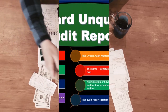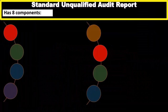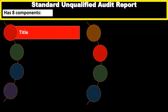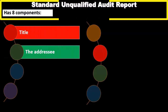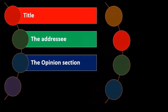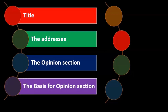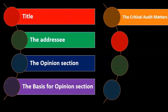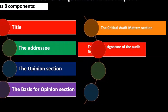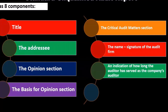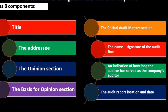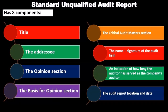There are eight typical components to the standard unqualified audit report. Those components include: a title, the addressee, the opinion section — which is the critical part, as providing an opinion is what the audit is fundamentally about — the basis for the opinion section explaining why we came to our opinion, the critical audit matters section, the name and signature of the audit firm, an indication of how long the auditor has served as the company's auditor, and finally the audit report location and date.